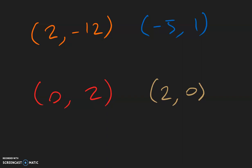Looking at the orange example, x is positive 2. The x direction is going left and right, so positive x is going to the right. So we can see that this moved to the right 2 units. And the y direction is negative 12, so negative y is up and down, meaning negative y is going down 12.